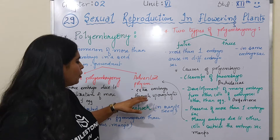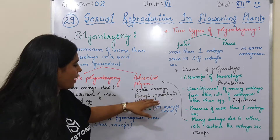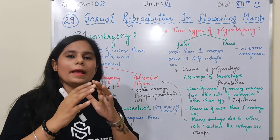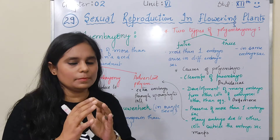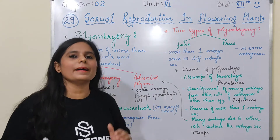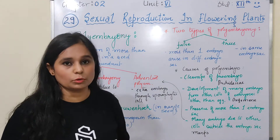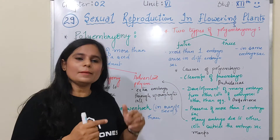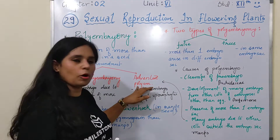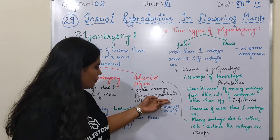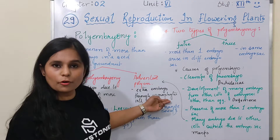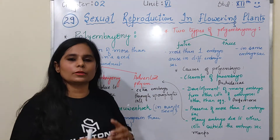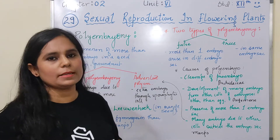In adventive polyembryony, extra embryos arise through sporophytic cells. What happens in this case is that the outer cells of the embryo sac — if they create an embryo, then it is called adventive polyembryony. The sporophytic tissues involved include the nucellus and integuments.